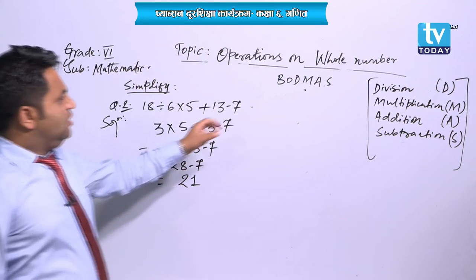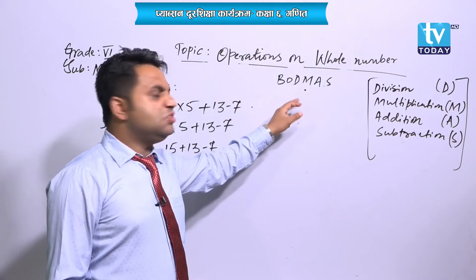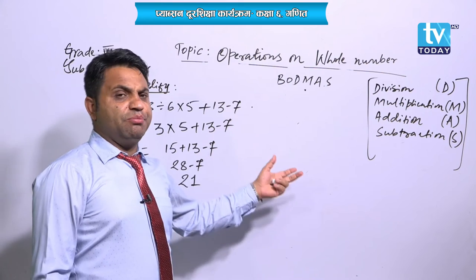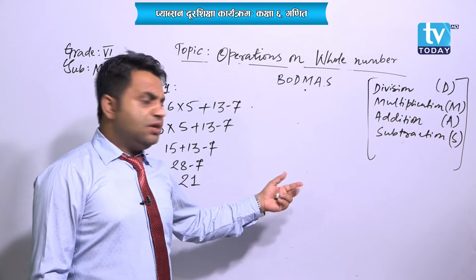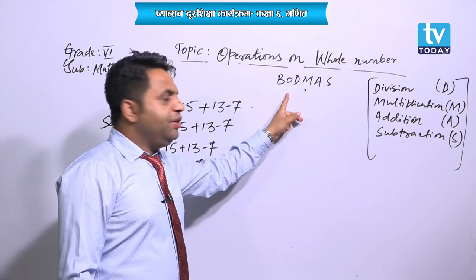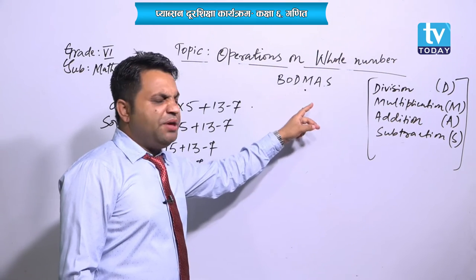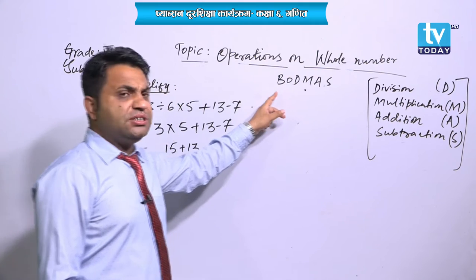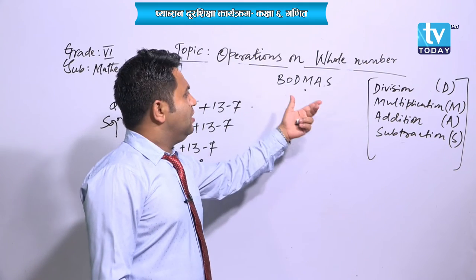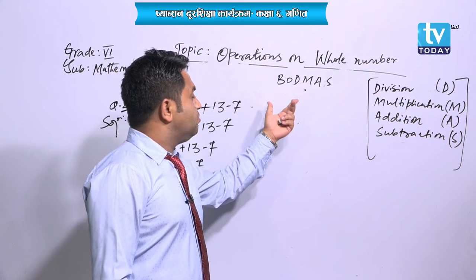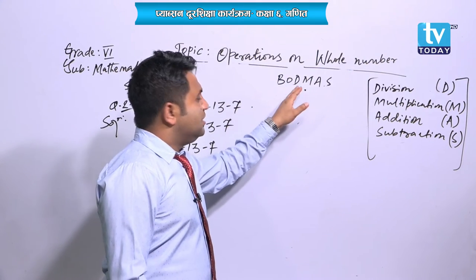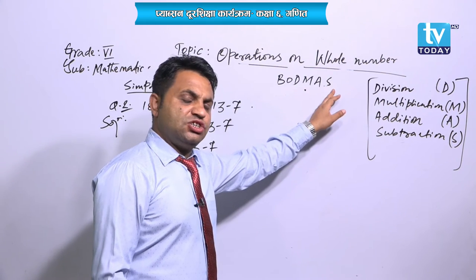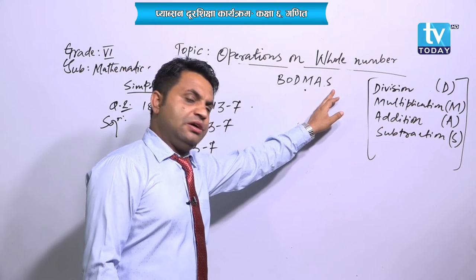You have to follow the rule, so it will be easy. Please do not do operations randomly. Follow the BODMAS rule. If there is no bracket, it does not matter — still follow the order: division, then multiplication, then addition, then subtraction.